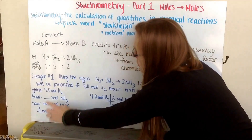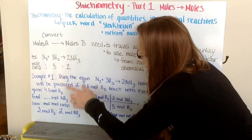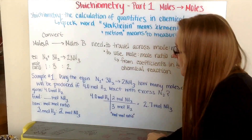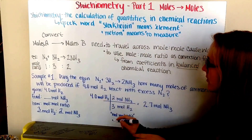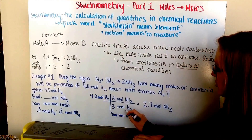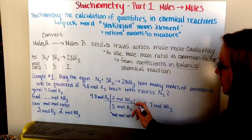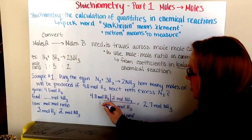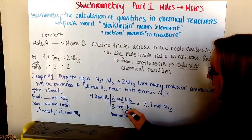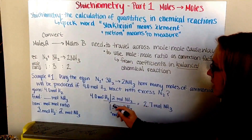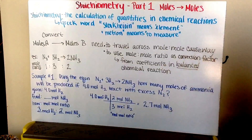My mole-to-mole ratio is three moles of H2 for every two moles of NH3. I start with what I'm given — 4.0 moles of hydrogen — and put moles of hydrogen on the bottom to cancel it out. My ratio is 3 moles of hydrogen for every 2 moles of ammonia, so I take 4 times 2 divided by 3, which gives me 2.7 moles of ammonia.